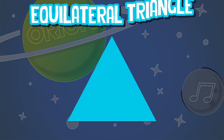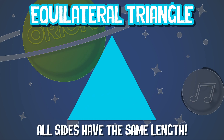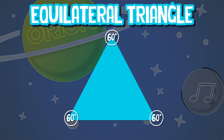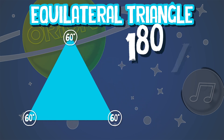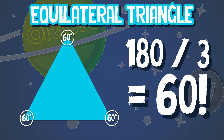The equilateral triangle is the first type we'll talk about. Equilateral means all sides have the same length. The equilateral triangle's angles all add up to 60 degrees, because 180 divided by 3 gives you 60.